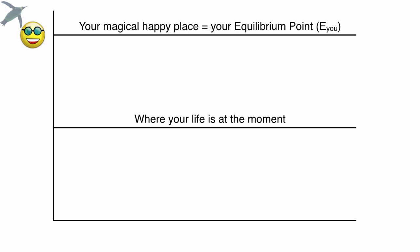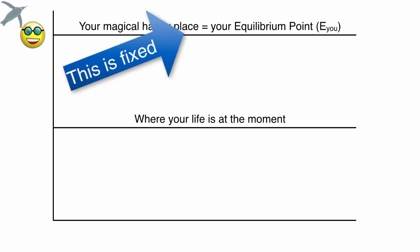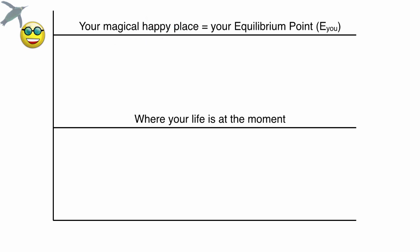Because the difference between where you are and where you want to be is enormous. And that is the key thing to understand. So where your life is, is always changing. Your magical happy place, we're going to call your equilibrium point or E sub U. For the purposes of this analogy, you have to imagine that that does not change. Your equilibrium point is fixed. So the difference between where you are and where you wish you were, that is the driving force for change. If you understand that, then all of this ion business will make sense.